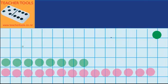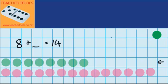Let's imagine I have 8 counters and I want to get some more counters so that I have the same amount as my friend who's got 14 counters. I've shown both of those amounts down here — here are the 8 counters I've already got and here are the 14 counters my friend has. So I'm thinking to myself, how many more counters do I need to get?